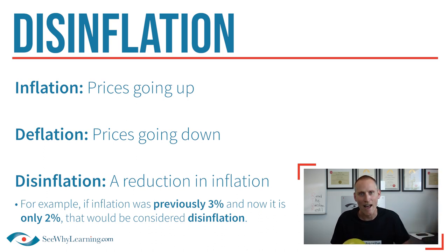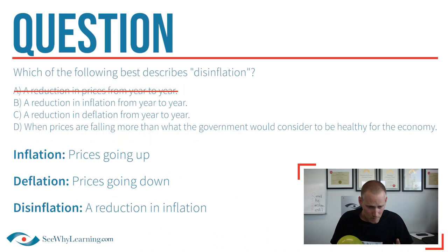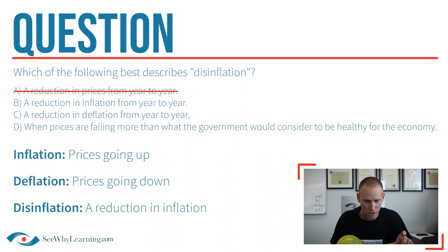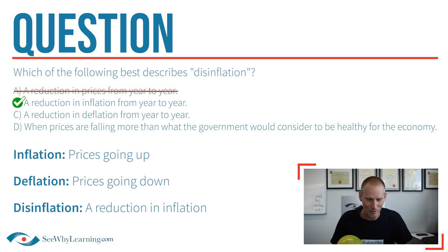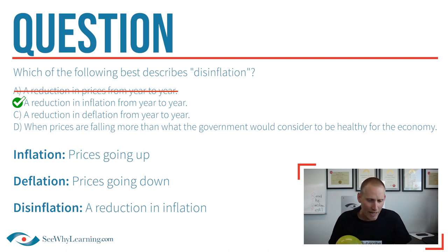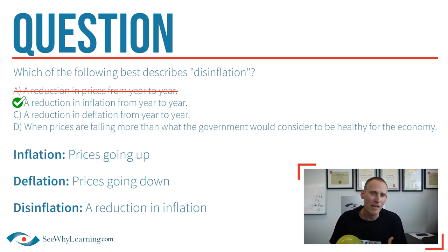In other words, prices are still increasing, just not as fast. Now if we look at the answers, we see answer B — 'a reduction in inflation from year to year' — that looks good. We still have inflation, it's just less inflation. Let's go ahead and pick answer B. And that's the right answer.